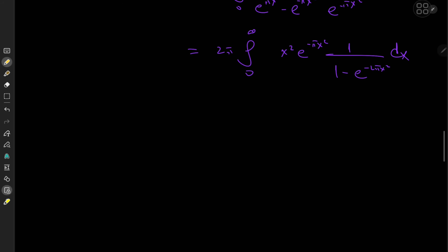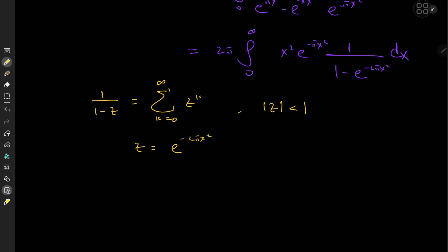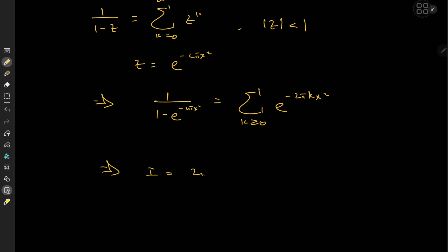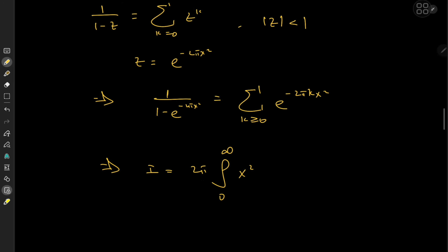For the geometric series, recall that 1/(1 − z) = Σ(k=0 to ∞) z^k, valid for |z| < 1, which is of course valid for z = e^(−2πx²) on the positive real line. So 1/(1 − e^(−2πx²)) = Σ(k=0 to ∞) e^(−2πkx²), and this implies that the target integral is now 2π times the integral from 0 to infinity of x² · e^(−πx²) · Σ(k=0 to ∞) e^(−2πkx²) dx.